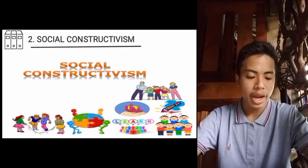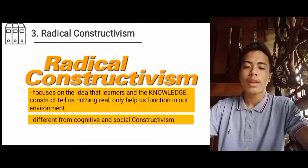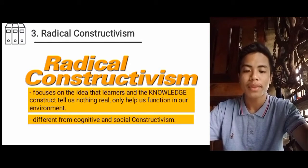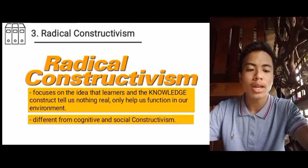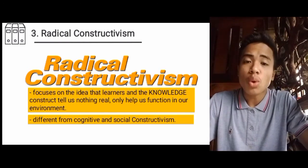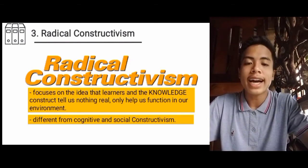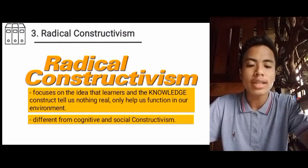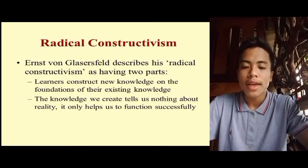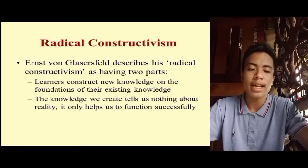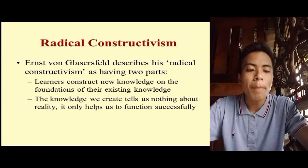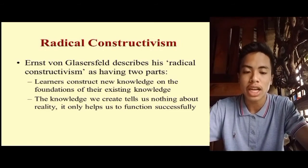The third type of constructivism is radical constructivism. This theory was developed by Ernst von Glasersfeld in 1974. It is different from cognitive and social constructivism. It focuses on the idea that learners and the knowledge they construct tell us nothing real — they only help us function in our environment. The overall idea is that knowledge is invented, not discovered. The things we bring to the table make it impossible for us to have truth — only interpretations of knowledge.